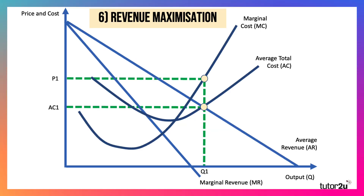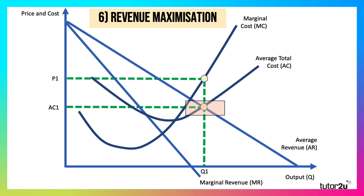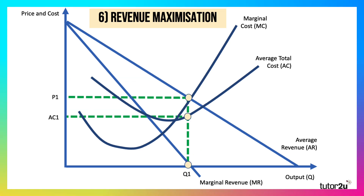Here's number six: revenue maximisation as a business objective. The labelling of the diagram is correct — the cost curves and revenue curves have been labelled correctly. But that intersection point is where cost equals revenue; that is the growth maximisation output, not revenue max. You maximise revenue where marginal revenue is zero — it's a different price and a different cost per unit.